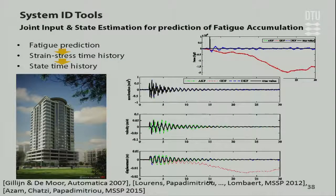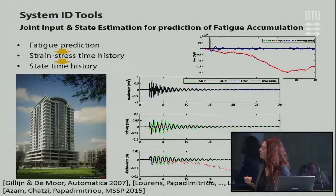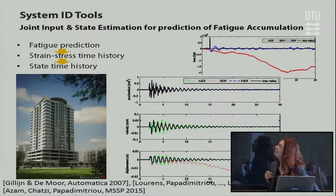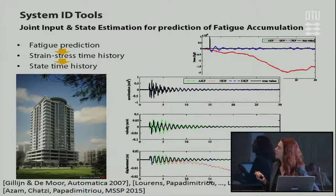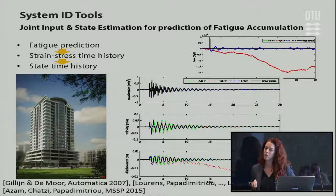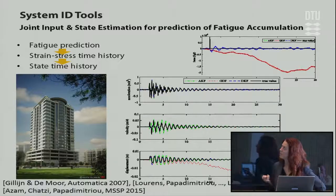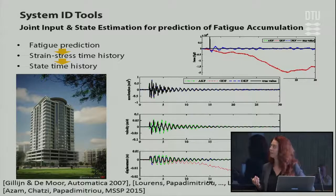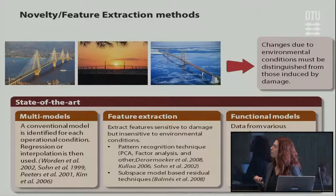In a further implementation, joint work with Kostas Papadimitriou addressed the issue of unknown loading. When loading is unknown and cannot be modeled as ambient, you can adapt the filters to achieve joint input-state estimation — not only the system response but also the acting load. What we care about most is the accurate response of the system, which is then exploited to get estimates of strain and therefore fatigue prediction accumulation in the structure, since the estimate of fatigue is inherently related to condition assessment.